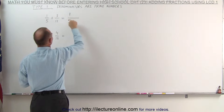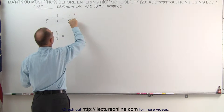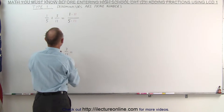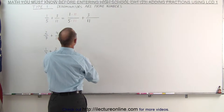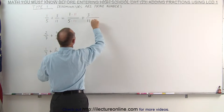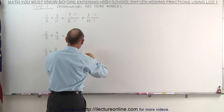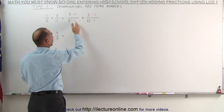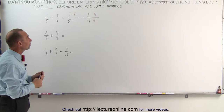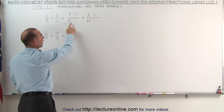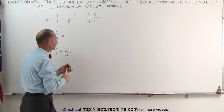So we have 1 over 5. We're now going to multiply both the numerator and the denominator by the denominator of the second fraction. We add that to the second fraction, and here we must multiply both the numerator and the denominator by the denominator of the other fraction, 5 over 5. Notice, when I multiply times 11 over 11, or times 5 over 5, that's the same as multiplying times 1, and nothing really changes. Also notice that now both denominators are the same: 5 times 11 is 55, and 11 times 5 is 55.